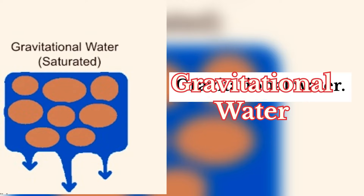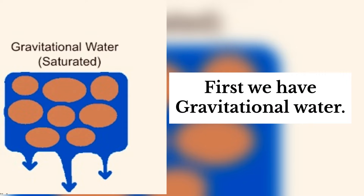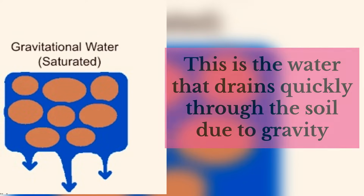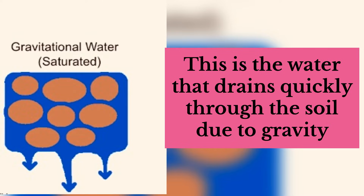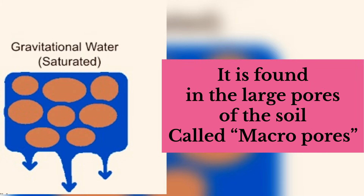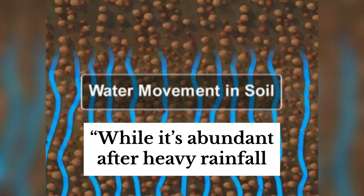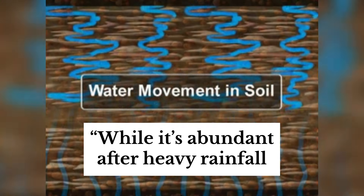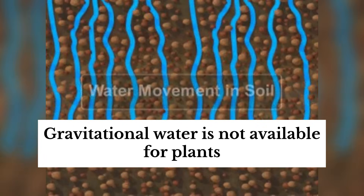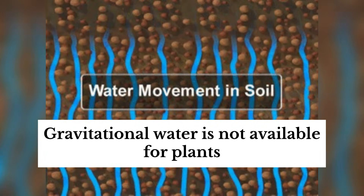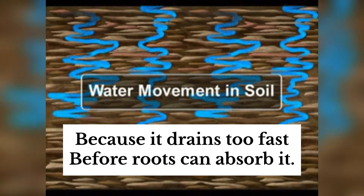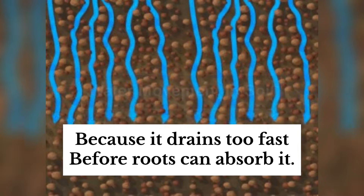First, we have gravitational water. This is the water that drains quickly through the soil due to gravity. It is found in the large pores of the soil, called macropores. While it's abundant after heavy rainfall, gravitational water isn't available to plants because it drains too fast before roots can absorb it.